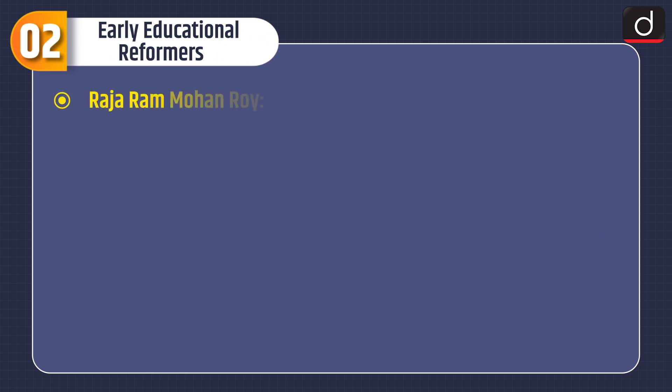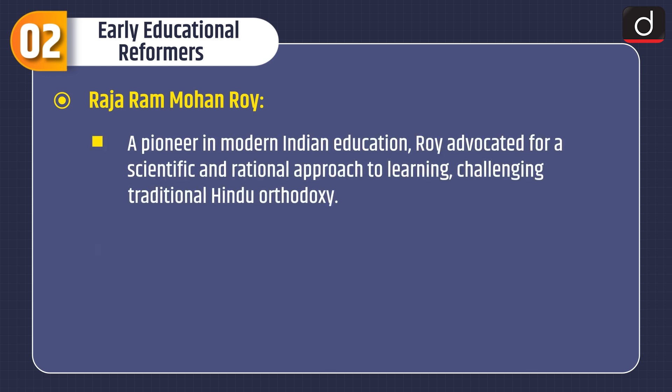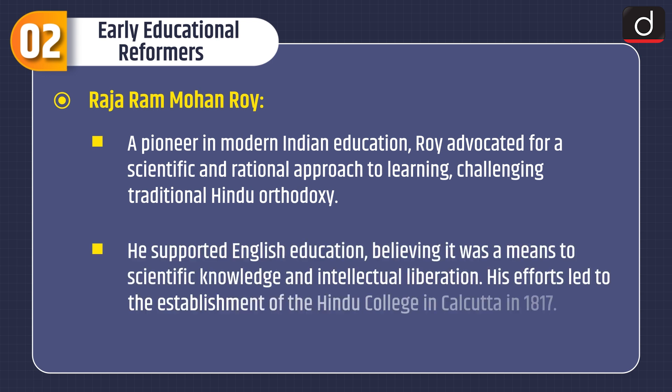Now let's discuss Early Educational Reformers. First is Raja Ramohan Roy. A pioneer in modern Indian education, Roy advocated for a scientific and rational approach to learning, challenging traditional Hindu orthodoxy. He suggested English education, believing it was a means to scientific knowledge and intellectual liberation.